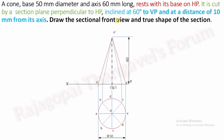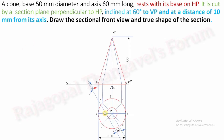Now move on to the section plane condition. The section plane is inclined at 60 degrees to VP at a distance of 10 mm from the axis. In the top view, draw an inclination of 60 degrees to VP. Since 10 mm from the axis is difficult to measure directly, draw a small circle of radius 10 mm centered at the axis. Draw the 60-degree inclination line as a tangent to this 10 mm radius circle. The distance is now 10 mm — the condition is satisfied.